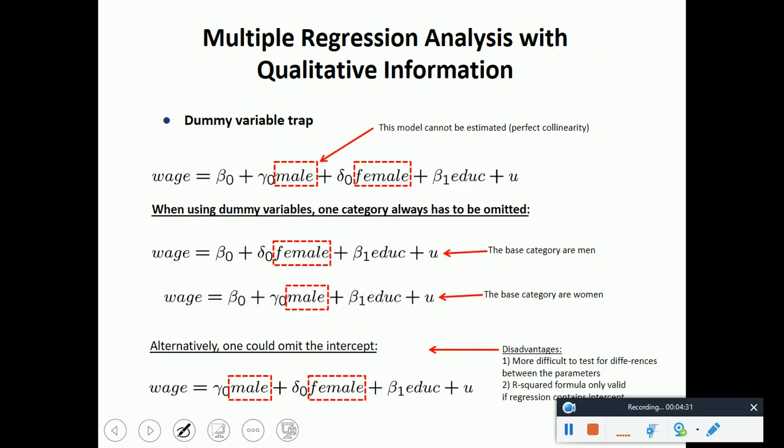But we also have to be careful if there is a dummy variable trap. Dummy variable trap can occur if you have perfect collinear variables in the model. Like here there is male and here female, they are perfectly collinear. So we cannot use dummy variables for male as well as female because it's a dummy variable trap. This could be a potential exam question.